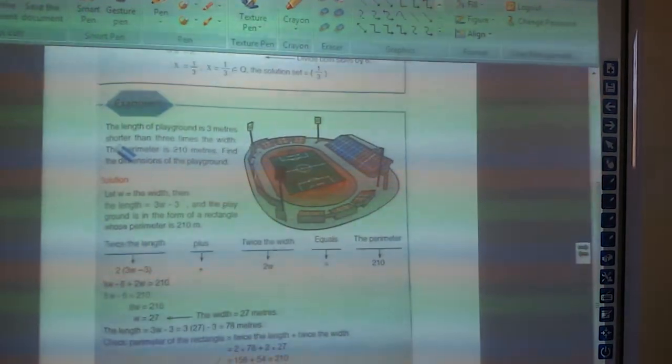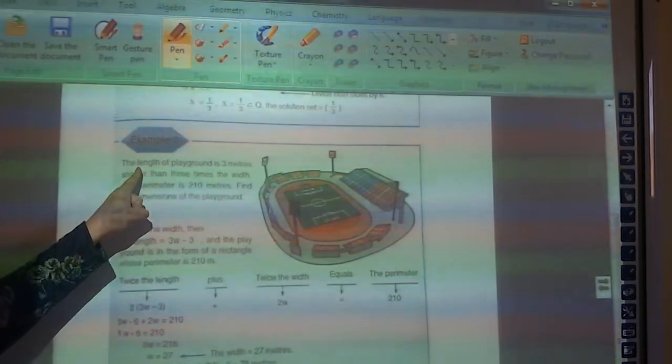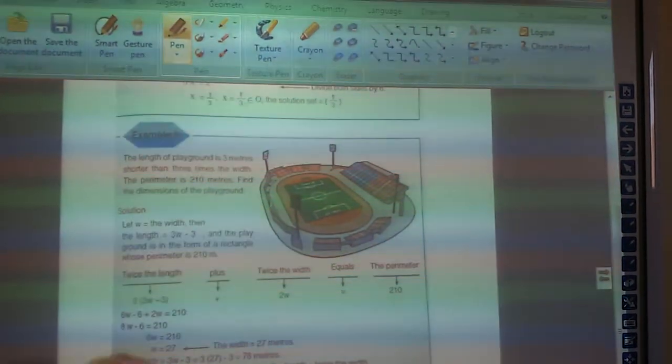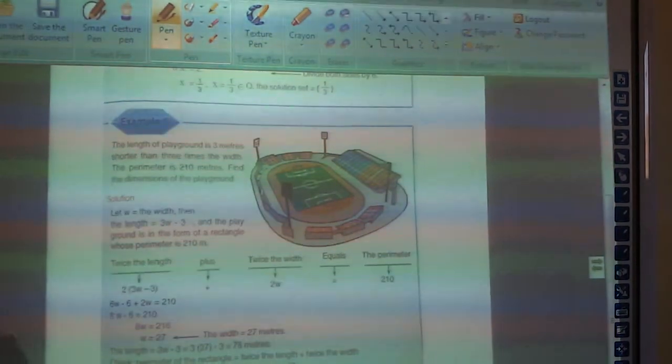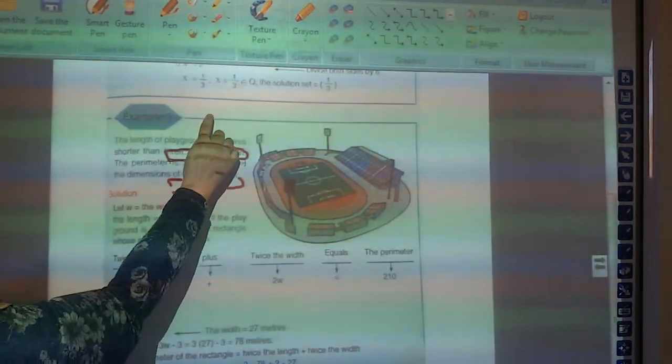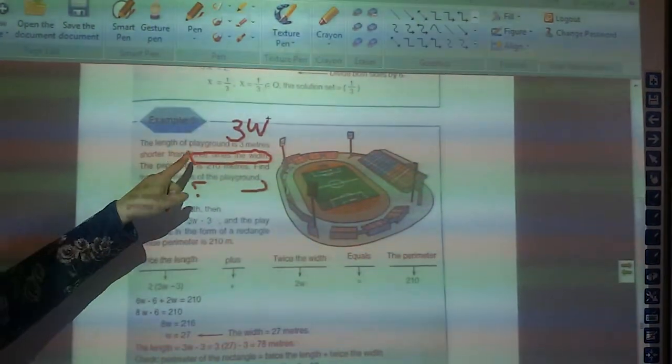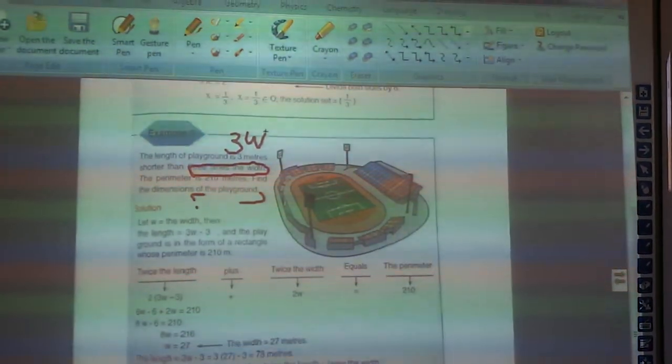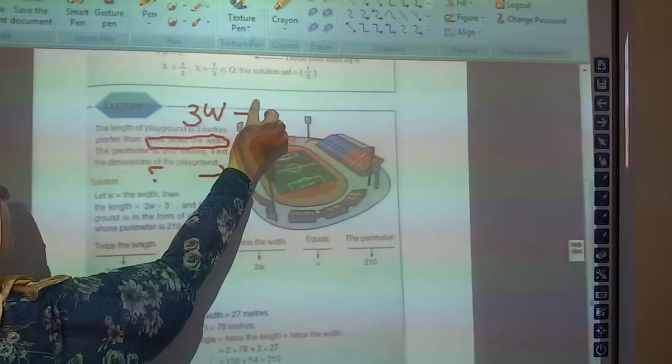So don't write L equals 3 only. No, look here. It's telling me that the length L is 3 meters shorter than 3 times. 3 times means 3W. 3 times the width. This part means 3W. And shorter than means you're going to make minus. So minus 3.